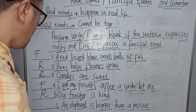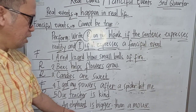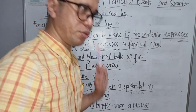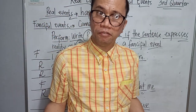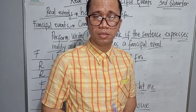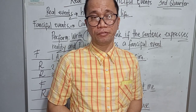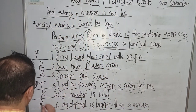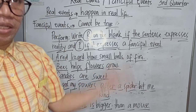Number six: An elephant is bigger than a mouse. You know that an elephant is the largest land animal in the world, so this happens in real life. This is R, or real events.